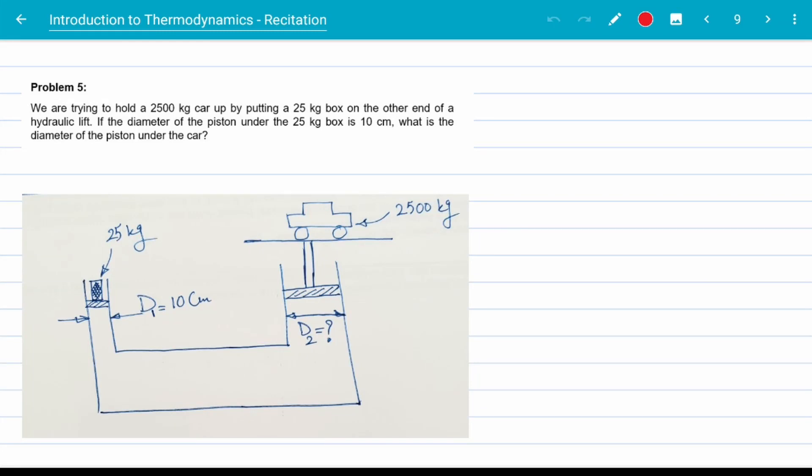Okay, problem five. So in lecture, we discussed that hydraulic jacks and hydraulic lifts are simple devices that use Pascal's law. The idea of the problem is very simple here. We want to hold the 2,500 kilograms car in the air using a 25-kilogram box. How big is the piston under the car?